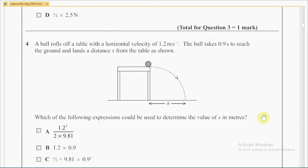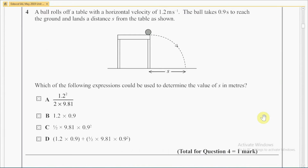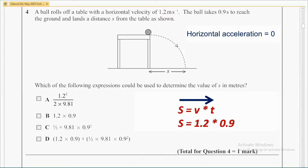Question 4. A ball rolls off a table with a horizontal velocity of 1.2 meters per second. The ball takes 0.9 seconds to reach the ground and lands a distance s from the table. Which of the following expressions could be used to determine the value of s in meters? In this question, we have to find the horizontal displacement of the ball. The horizontal acceleration on the object is 0, since there are no forces acting on the object in the horizontal direction. Therefore, we can simply apply S equals V times T, where V is 1.2 meters per second and T is 0.9 seconds. So the answer should be B.